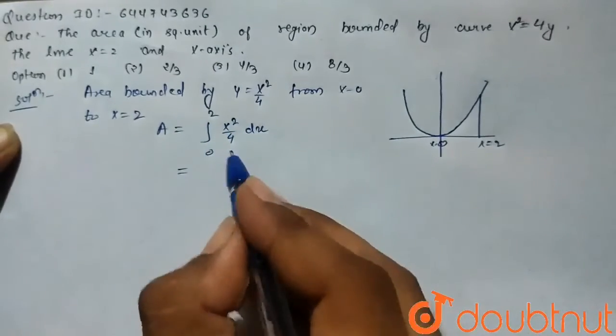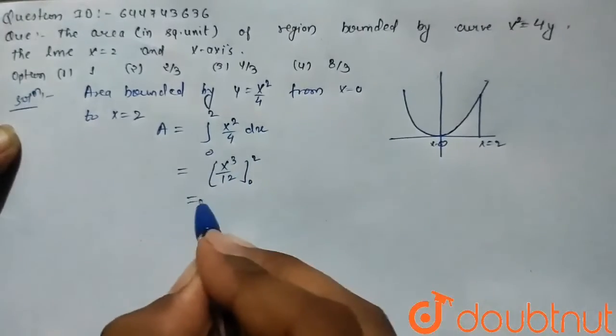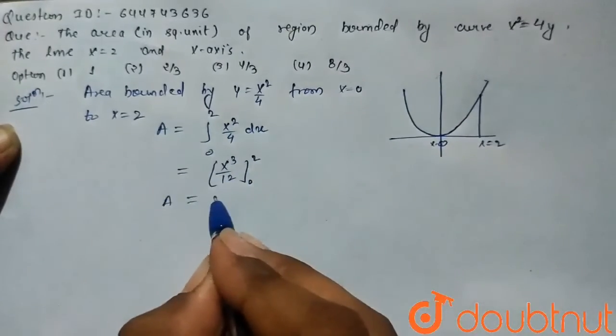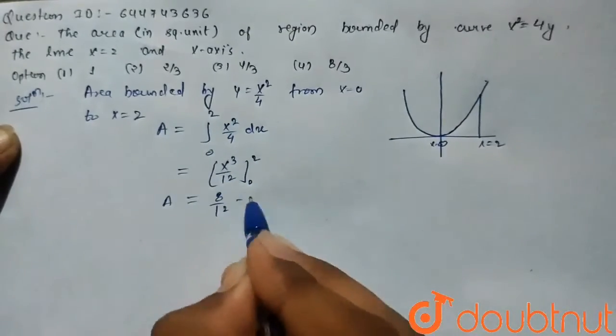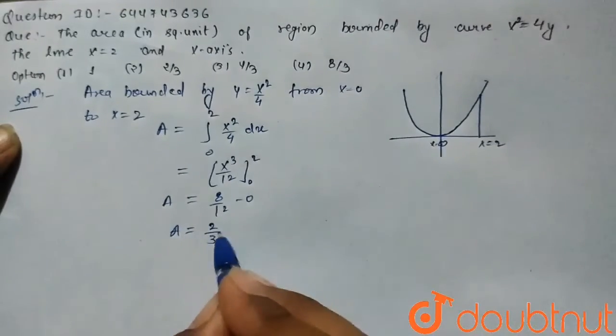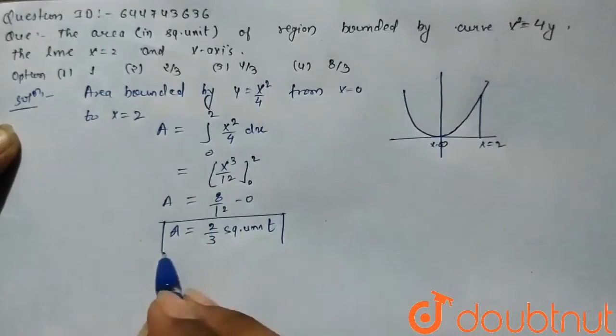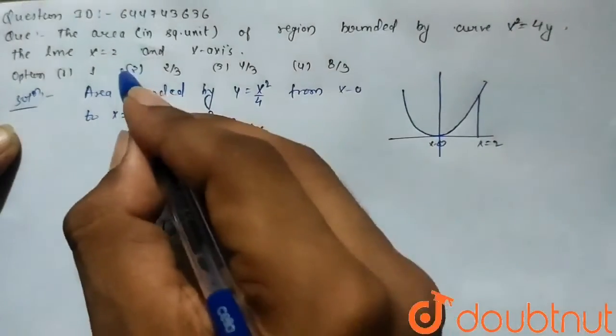So the integration of x squared is x cubed by 12 from 0 to 2. On putting limits it becomes 8 by 12 minus 0. So the area equals 2 by 3 square units. So our option 2 is correct.